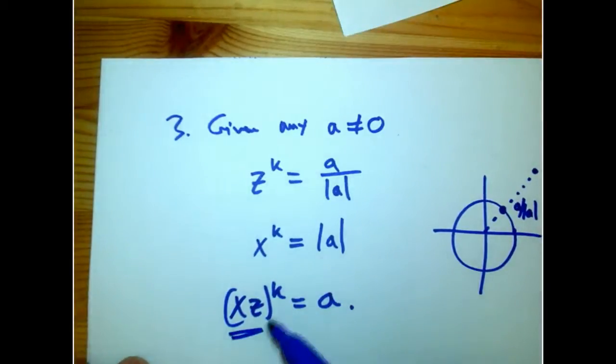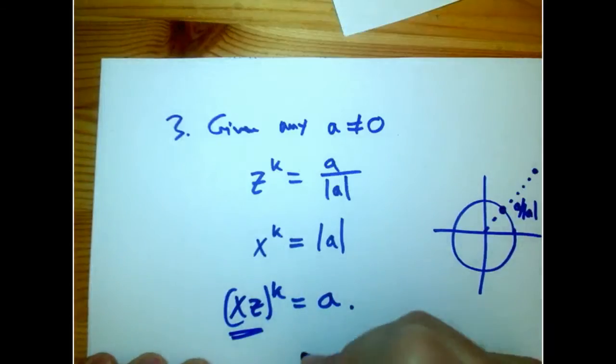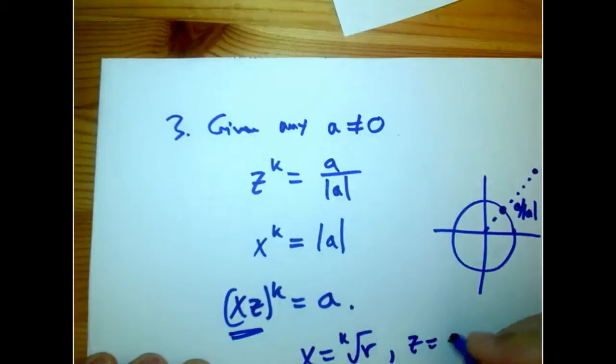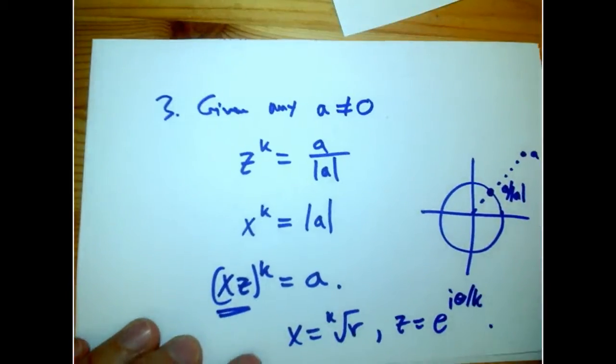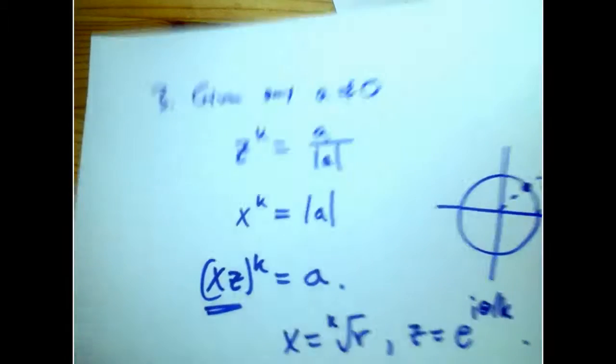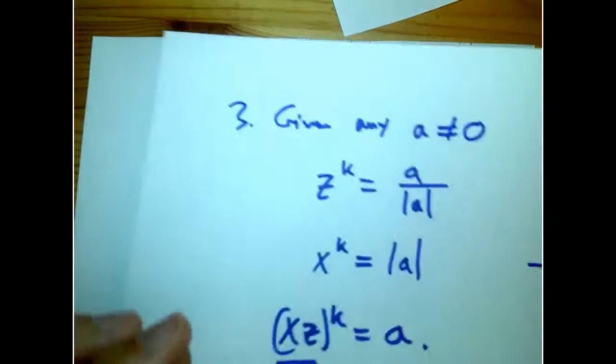Secretly of course, x is the kth root of r and z is e^(iθ/k). But we never had to know about the e^(iθ) business. Just emphasizing that it's really about algebra and very basic topology and nothing fancier.